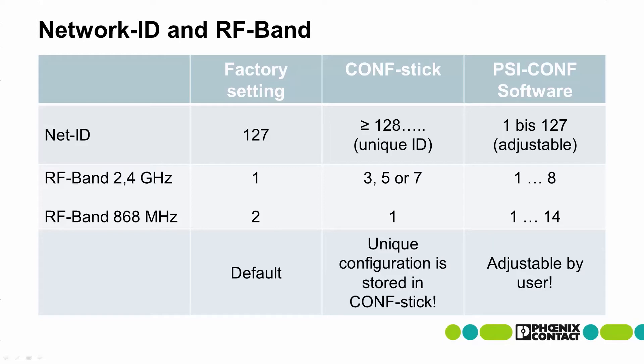By default, all wireless modules have the same network ID and RF band. Wireless modules with the same net ID and RF band can easily connect to each other. If several systems are run in parallel, each wireless network must have a unique net ID and RF band so that the systems can communicate in parallel without disturbance.